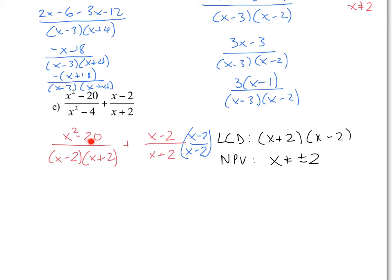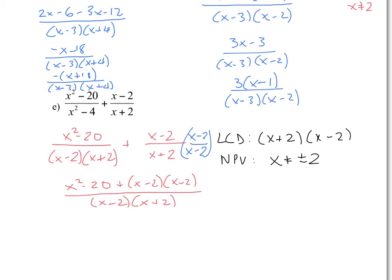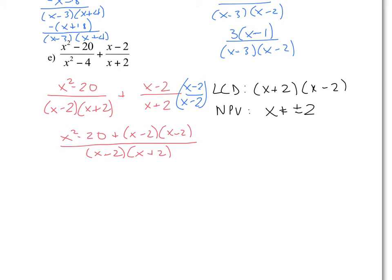On the numerator: x squared minus 20 stays unchanged, plus x minus 2 times x minus 2, with the common denominator x minus 2 times x plus 2. Again, do not cancel x minus 2 from numerator and denominator — it is not a factor of the numerator because it is added to the other terms. Expand: x squared minus 20 plus x squared minus 4x plus 4, divided by x minus 2 times x plus 2. Combining like terms gives 2x squared minus 4x minus 16, divided by x minus 2 times x plus 2.